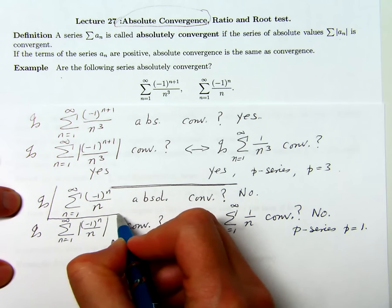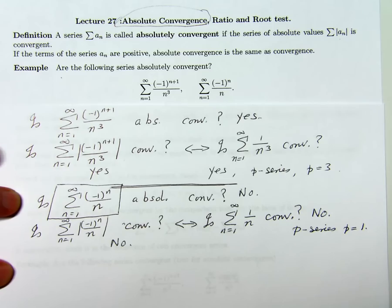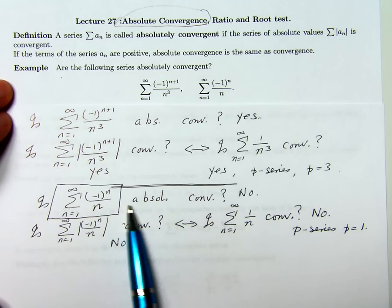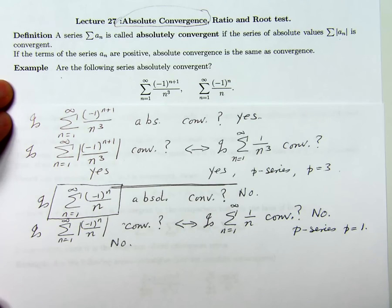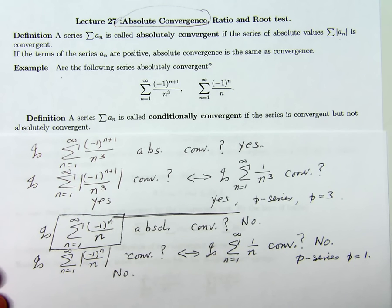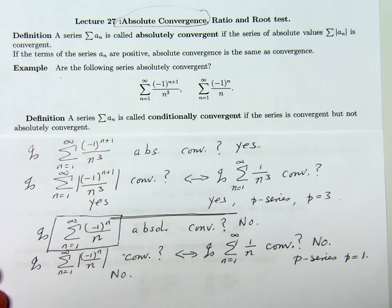Here's where we see the subtlety in this definition, because we know from last time that this series is actually convergent — using the alternating series test, we can show it's a convergent series. So this phenomenon of a series being convergent but not absolutely convergent is important enough to get a name of its own. We call that conditional convergence. A series is conditionally convergent if it converges, but the sum of the absolute values does not converge.